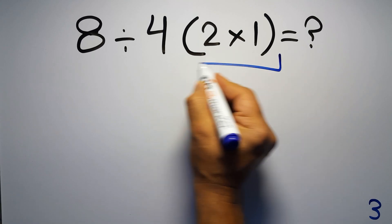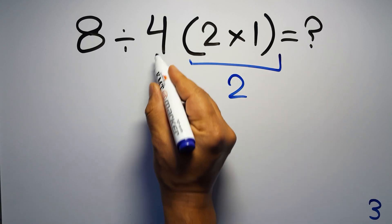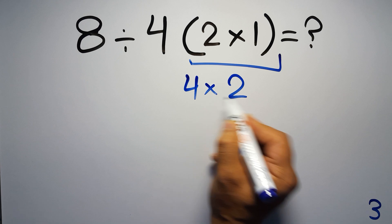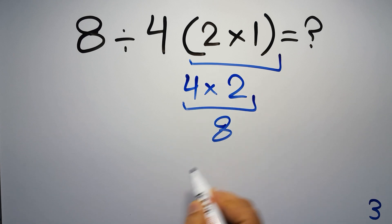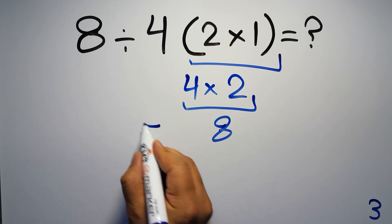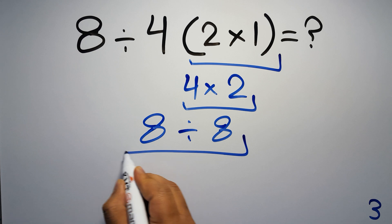2 times 1 gives us 2, and 4 times 2 equals 8, so 8 divided by 8 gives us 1. But this answer is not correct.